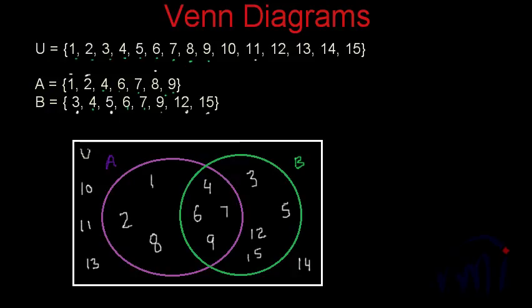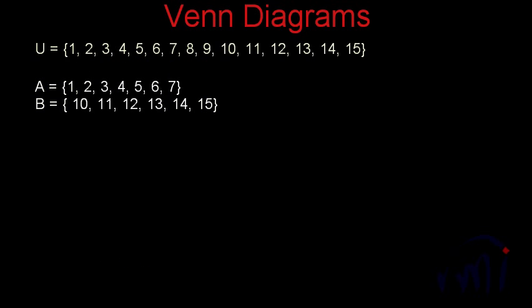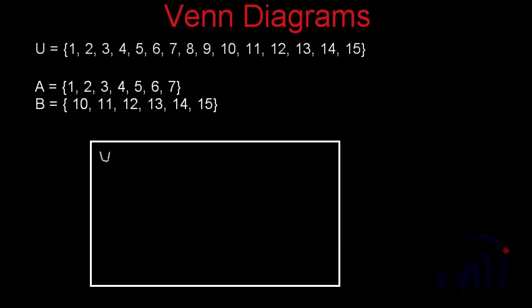This is the pictorial representation of sets using Venn diagrams — this is when we have a few common elements among the two sets. Now, what if we don't have any common elements? If set A has numbers from 1 to 7 and set B has numbers from 10 to 15, there are no common elements. Sets with no common elements are called disjoint sets, and they are represented by two circles that don't have any overlapping area.